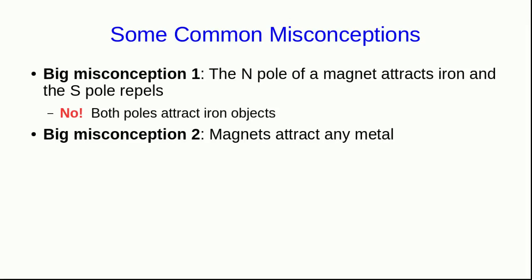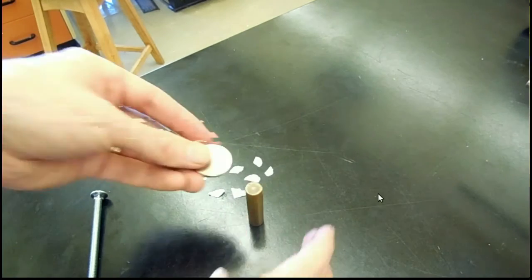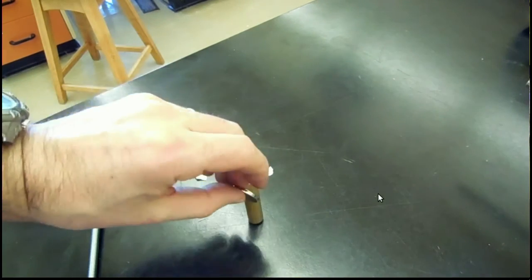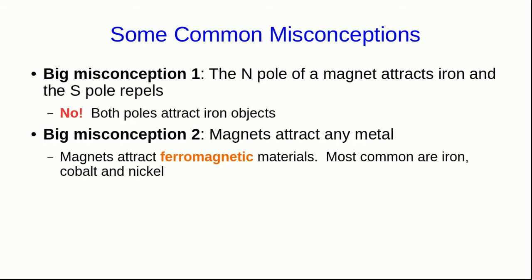The other big misconception is that magnets attract any metal, but they certainly don't. A magnet won't attract copper or brass. Magnets attract ferromagnetic materials, and the most common ferromagnetic materials are iron, cobalt, and nickel. That's what most magnets used to be made of, but these days the strongest magnets are made out of various exotic high-tech ceramics.